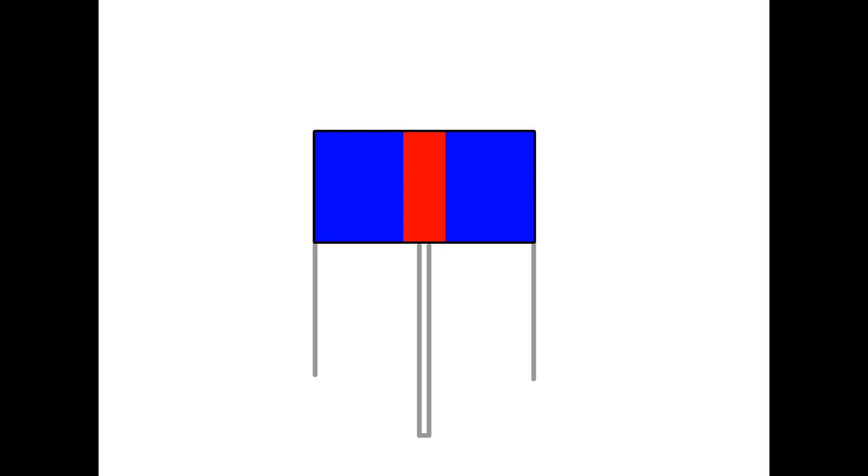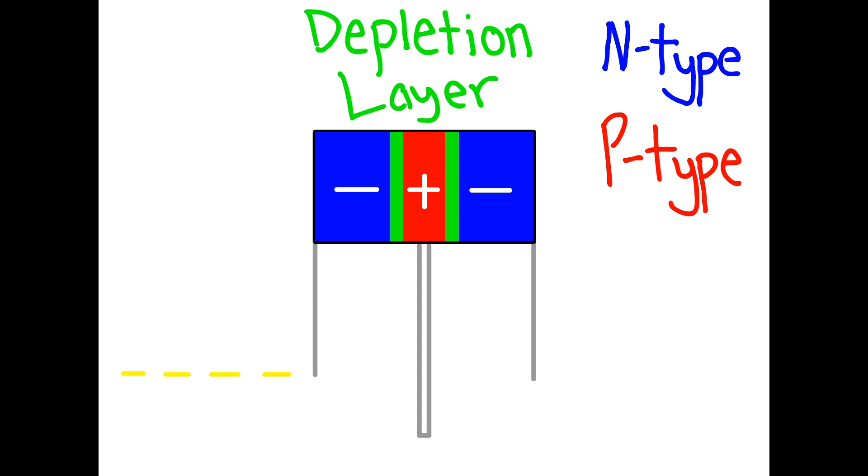Transistors are made up of two negatively charged pieces of silicon placed on either side of a positively charged piece. When placed side by side, the p-type and the n-type parts make a natural barrier to current called a depletion layer. This means that electricity cannot flow through the transistor, which means it's in the false or the zero state.